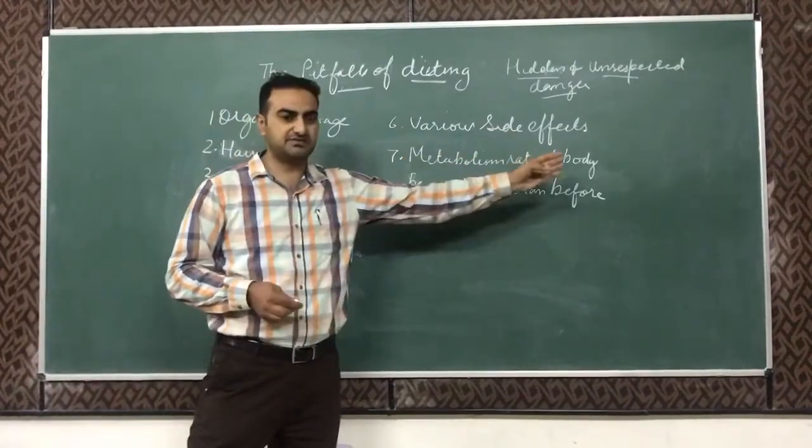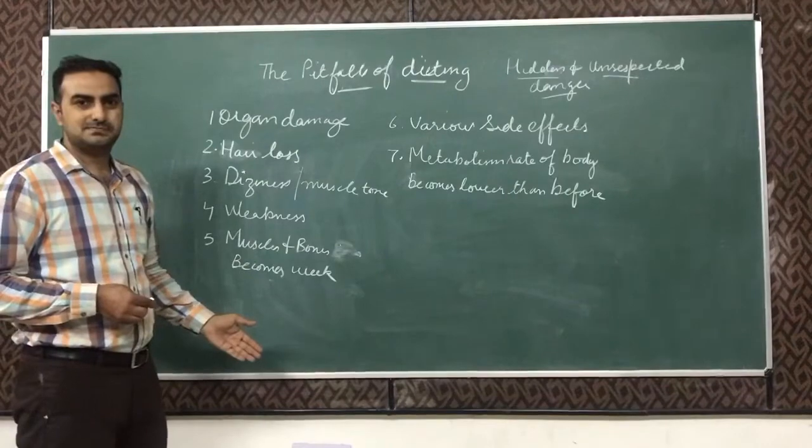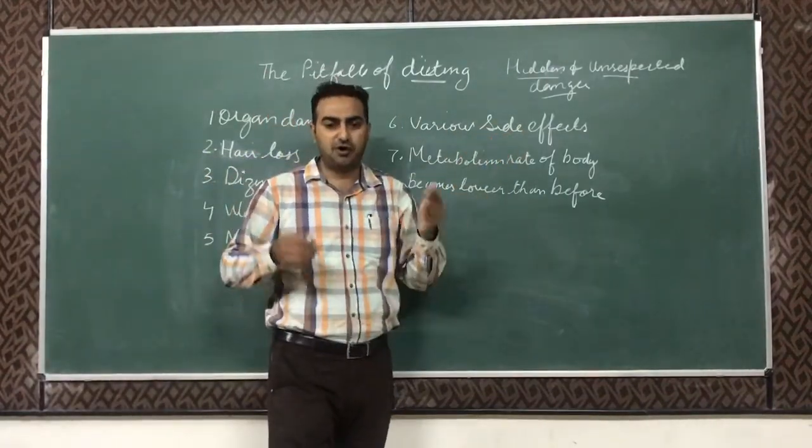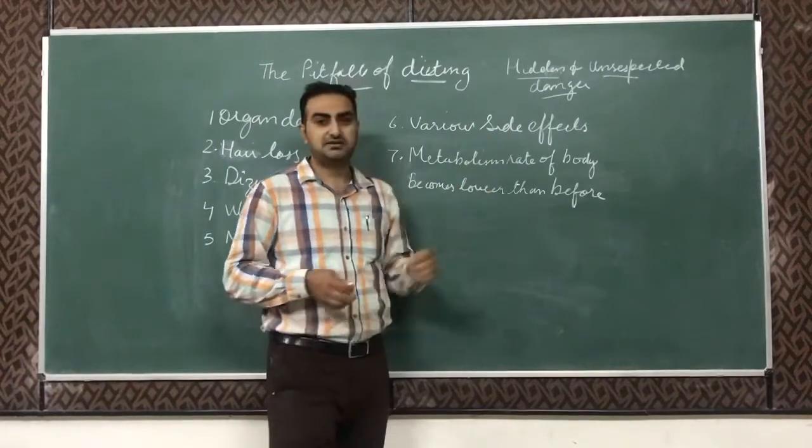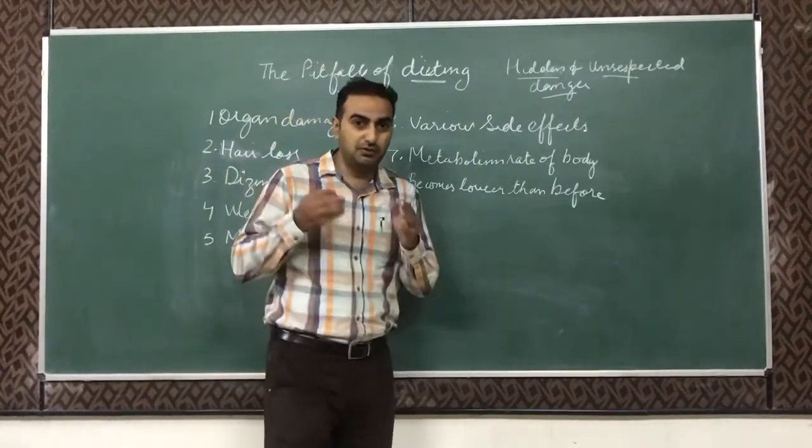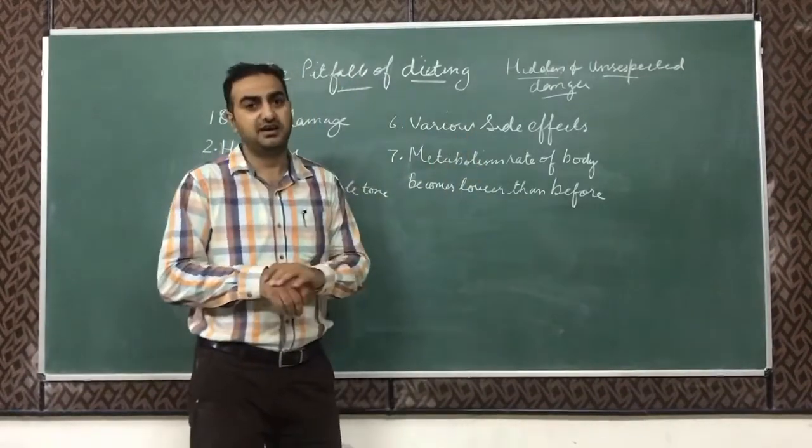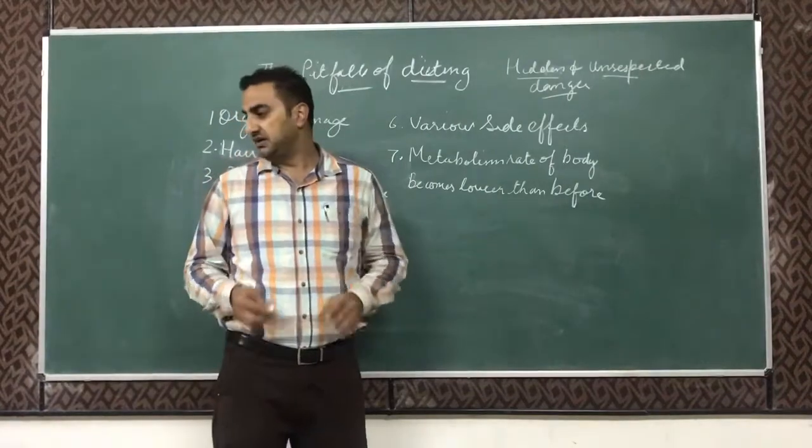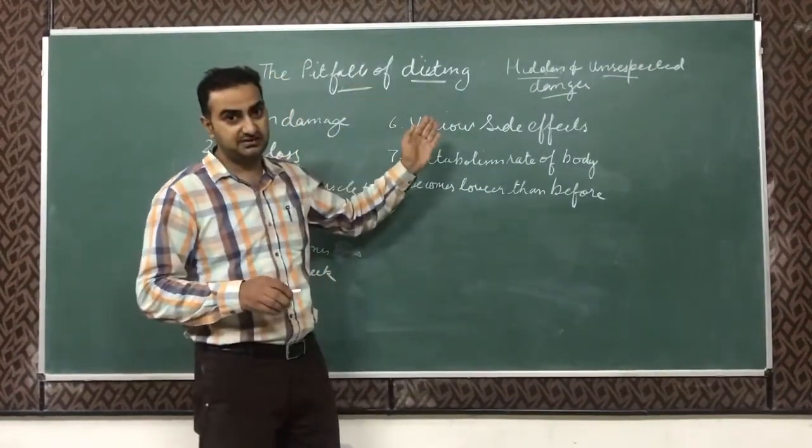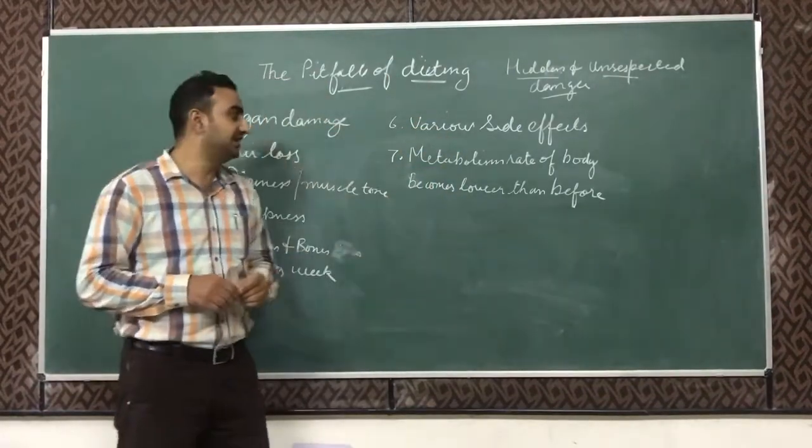Next is various side effects. Weakness of eyesight, weakness of body, anemia means your blood RBC counts goes down, WBC immunity goes down. So many kinds of side effects are there if the person is not eating proper diet or is on crash dieting, means he is fasting all that for continuous many days.